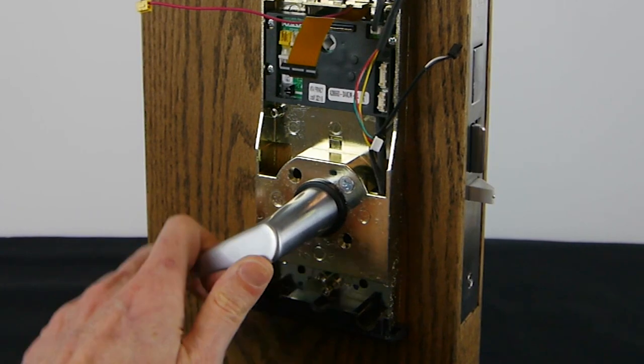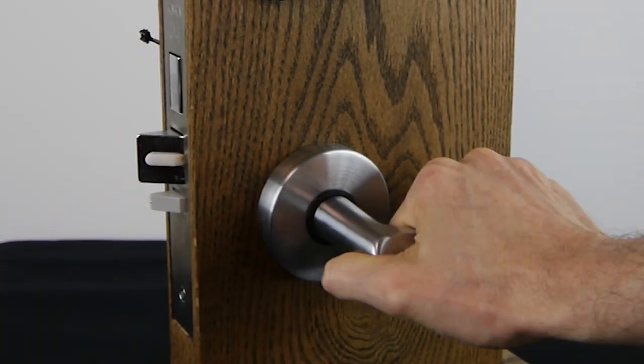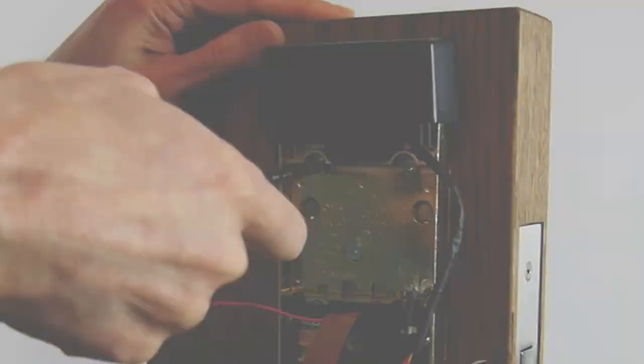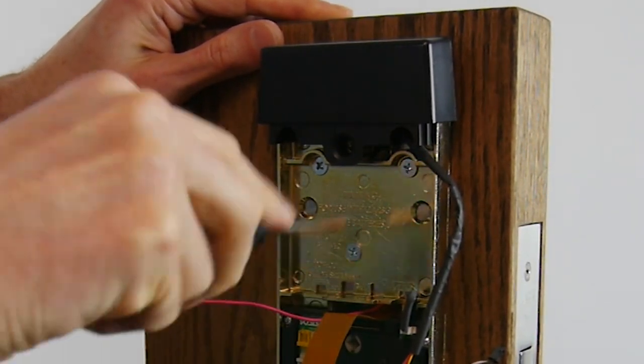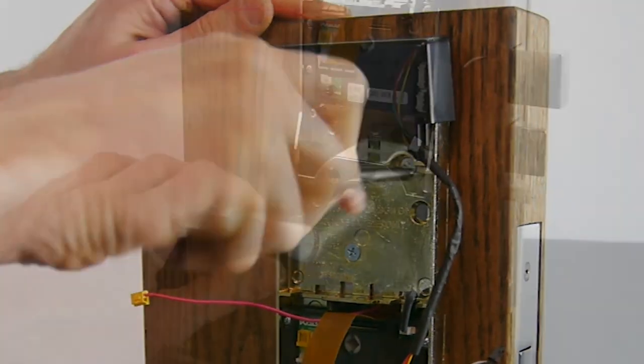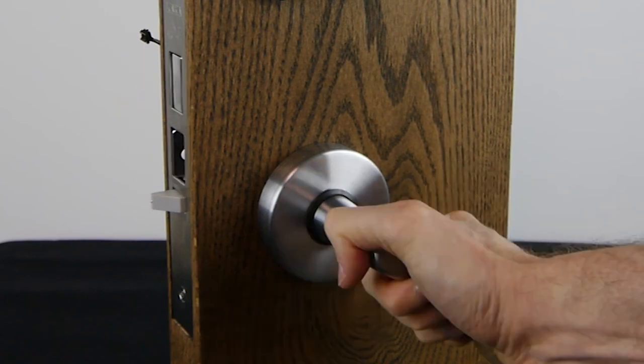Check the alignment of the inside trim and make sure both levers rotate without binding. Once the inside trim is properly aligned, fully tighten the screws and secure the reader assembly. Again, check both levers to make sure they rotate without binding.